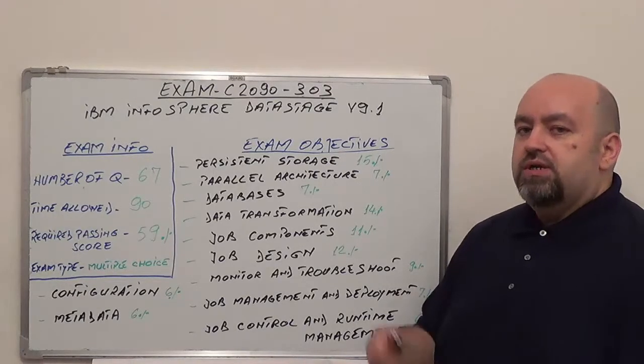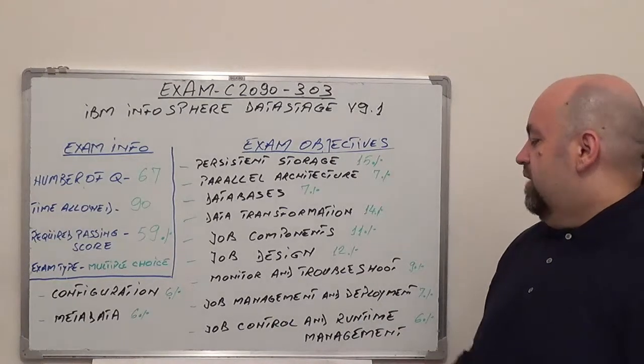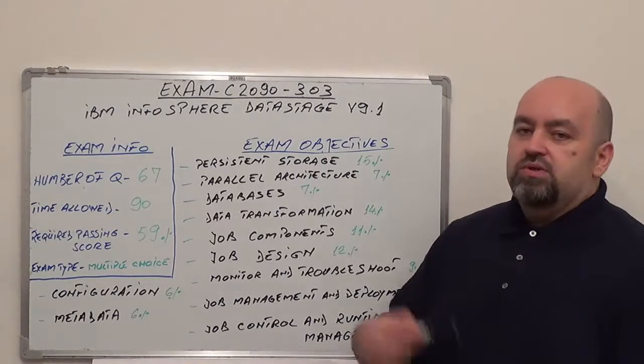Next one is job management and deployment, 7% of total questions. And, of course, the last one can be job control and runtime management, with 6% of total questions.